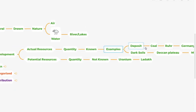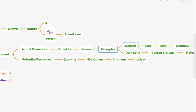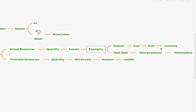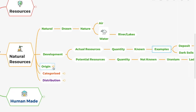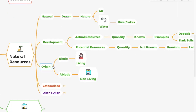Examples of actual resources include the rich deposit of coal in the Ruhr region in Germany, and dark soil in the Deccan Plateau in Maharashtra — we know the quantity of these resources. Potential resources are those whose quantity we do not know, like the quantity of uranium found in Ladakh.